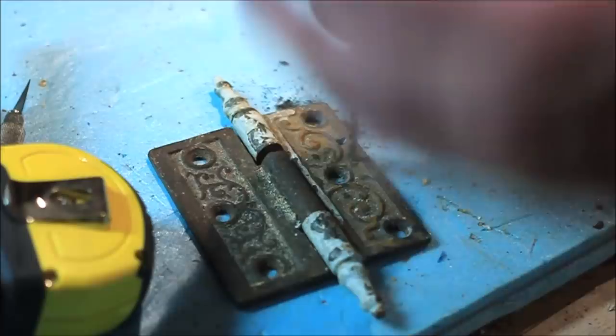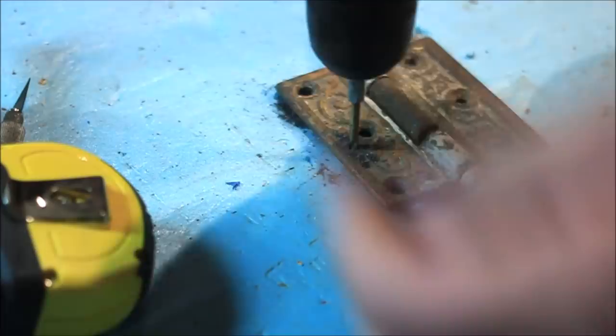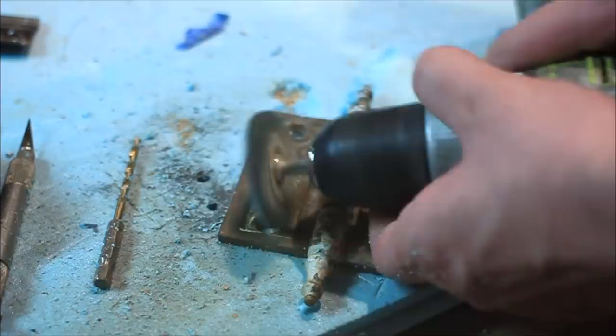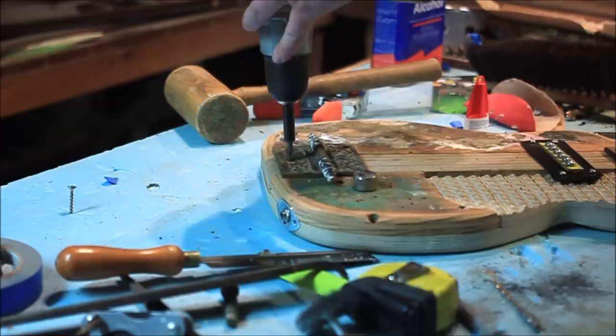I'm not exactly sure what to call the part I'm making here, it's not quite the bridge because the bridge holds the strings up over the pickups, it's like the string anchor, I guess. Either way, from my cigar box guitar building experience and watching a few guys do that, I know that you can use a hinge to hold the strings in this manner. And me being the hoarder and overachiever that I am, I decided to use this really badass antique hinge to accomplish this.